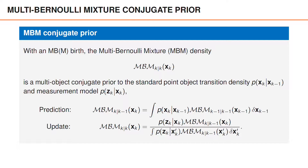That means that if we have an MBM density at time k-1, the predicted density is MBM, and the posterior density at time k is also an MBM density.